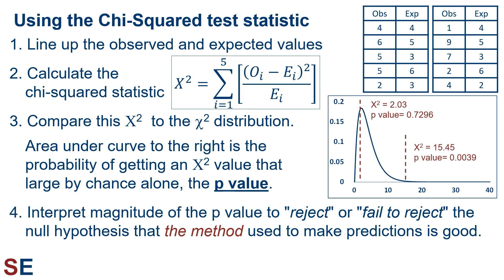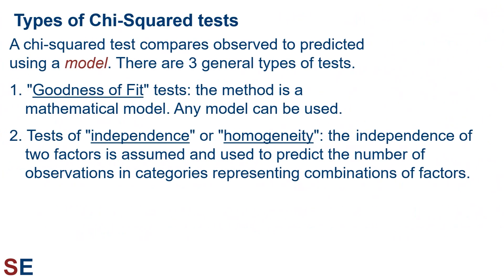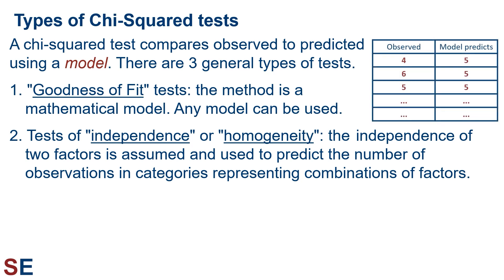So what kinds of models is this technique used to test? A chi-squared test compares observed to predicted using a model. There are three general types of tests. First, for goodness-of-fit tests, the model is any one of a number of mathematical models that make predictions once we have the appropriate parameter values to use it. Any model can be used. For these tests, we would usually arrange our number of observations in each category and line them up with the predicted number from our model as shown to the right.